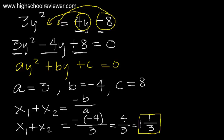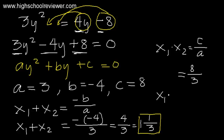For the product of the roots, x₁ times x₂ equals c over a. The value of c is positive 8 divided by a which is positive 3. So 8 divided by 3: the whole number is 2, and 8 minus 6 is 2, so this gives us 2 and 2/3. Therefore x₁ times x₂ equals 2 and 2/3.